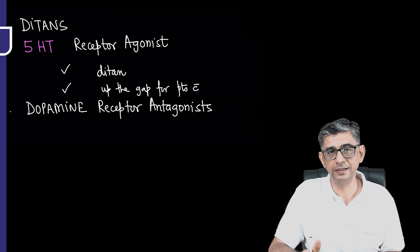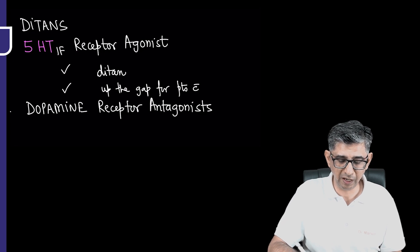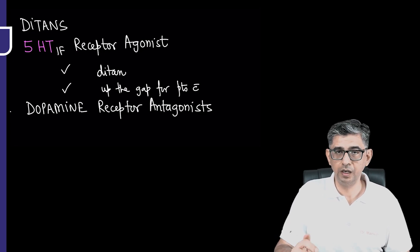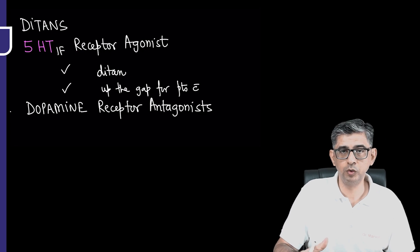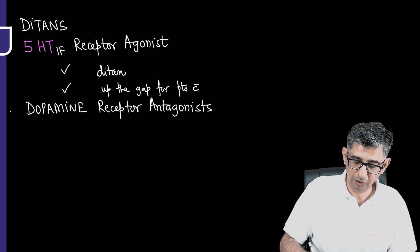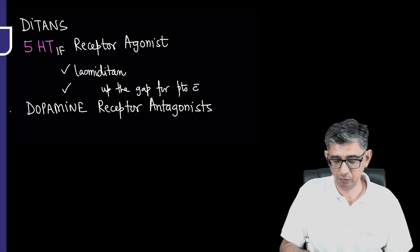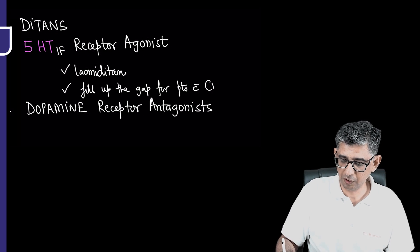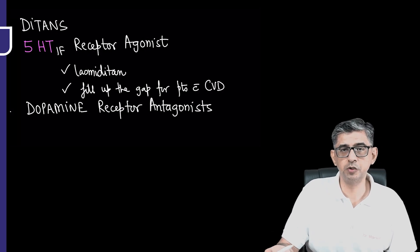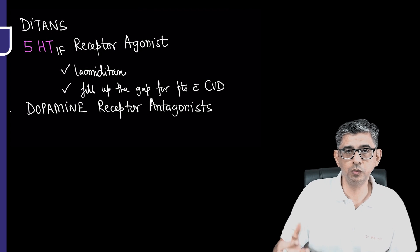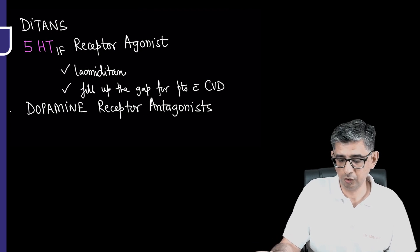The next drug category to be remembered is ditans. This molecule would be a 5-HT-1F receptor agonist. Unlike in tryptans where the molecule is 5-HT-1B/1D partial agonist, the name of the molecule to be remembered here is lasmiditan. The advantage of this would be that it would be filling up the gap for especially those patients who are having cardiovascular disease, because we discussed tryptans cannot be used in those patients who are having ischemic heart disease concomitantly present.